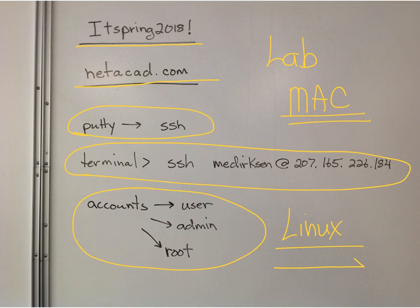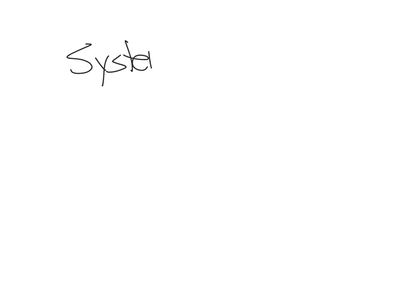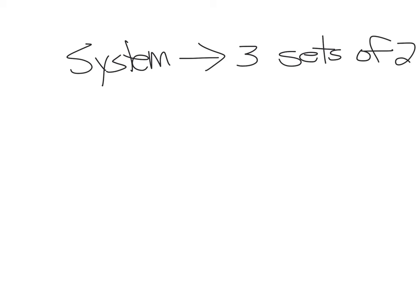The next thing the students need to do — they looked at the systems in the room. We have three sets of two, so we have six machines we're going to use, and we'll have three groups manage those machines.